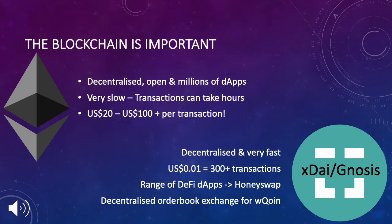That's why we've decided to use the XDAI or NOSUS blockchain. It is a fully decentralized, autonomous network that is as fast as coin and also has very low transaction fees. NOSUS also provides access to a range of DeFi solutions, including HoneySwap, which is similar to Uniswap. You will also have access to an order book decentralized exchange which was specifically built for our W coin.